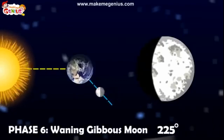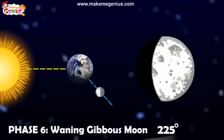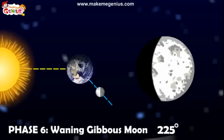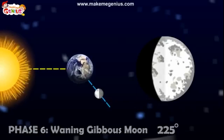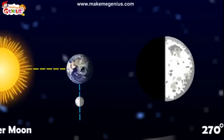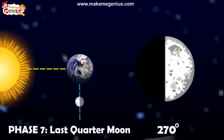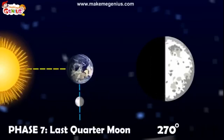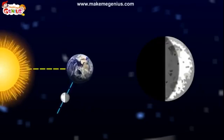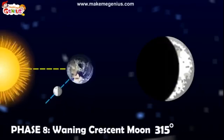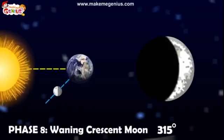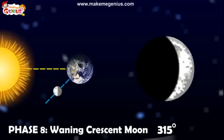Phase 6 is the waning gibbous moon. The moon is waning, that is decreasing, going from full moon to quarter moon. Phase 7 is the last quarter. The moon appears half lit again. Phase 8 is the waning crescent moon. This is the last phase before the next new moon.